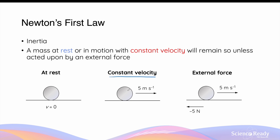So if there are no external forces acting on this ball, it will travel at 5 meters per second forever. Now of course that is not realistic, because normally when a ball is moving at a constant velocity, let's say 5 meters per second on a surface, there will be a frictional force acting on the ball. This frictional force is an example of an external force that will prevent the ball from continuing to travel at this constant velocity.